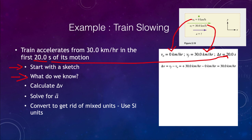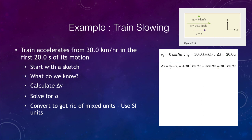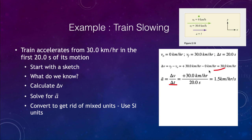Next, we calculate the change in velocity: final velocity minus initial velocity. Because the initial velocity was zero, the change in velocity is 30 kilometers per hour. We can then use the acceleration equation: average acceleration equals change in velocity divided by change in time. Dividing 30 kilometers per hour by 20 seconds gives us 1.5 kilometers per hour per second for the acceleration.